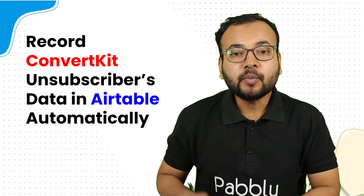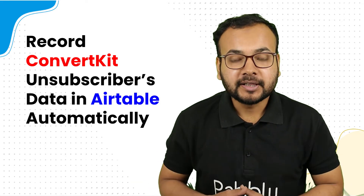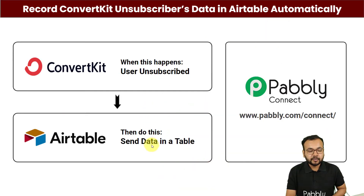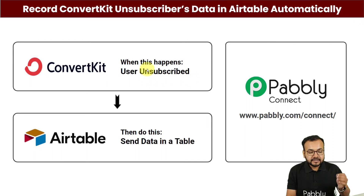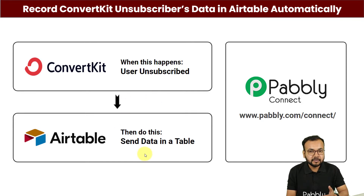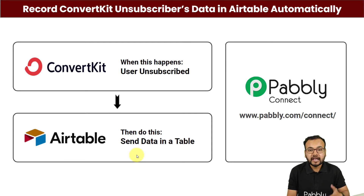As and when any person unsubscribes from your emailers, the data of that person is going to be saved automatically in an Airtable table. This will be the flow of this automation — when any user unsubscribes from your email, their data is saved in Airtable automatically. You need not manually check which person is opting out from your emails or manually sort and add that data.